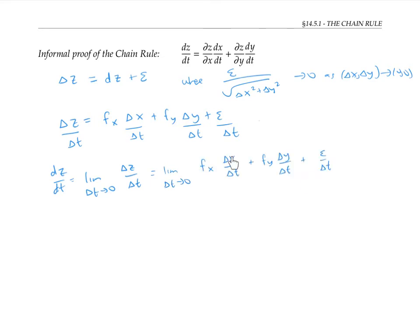Now the limit of delta x over delta t is just dx/dt, and the limit of delta y over delta t is dy/dt. So we're left with having to compute the limit as delta t goes to zero of epsilon over delta t.